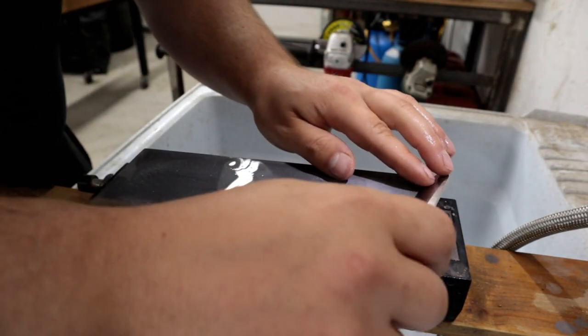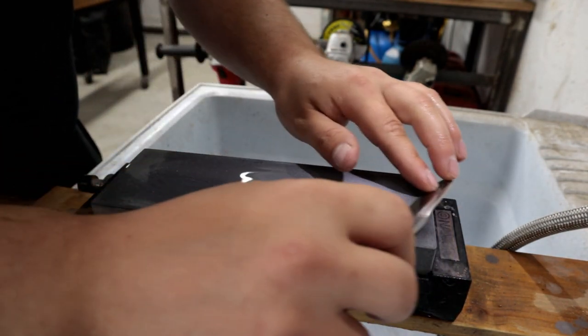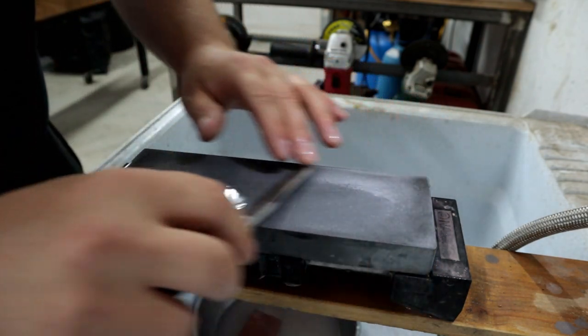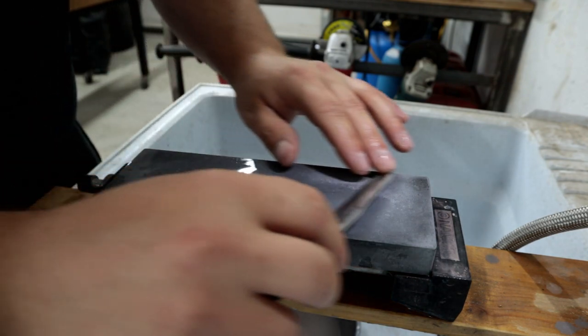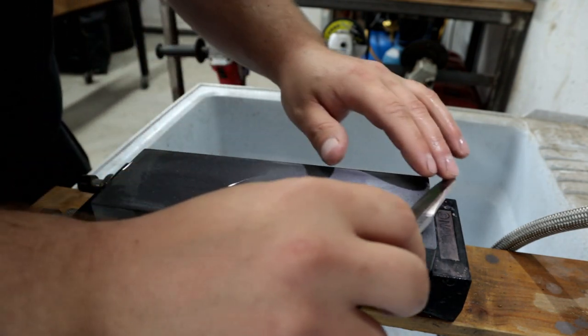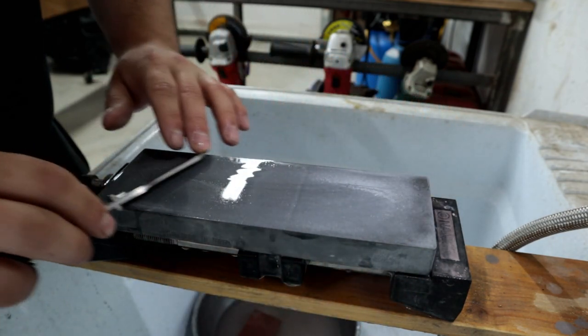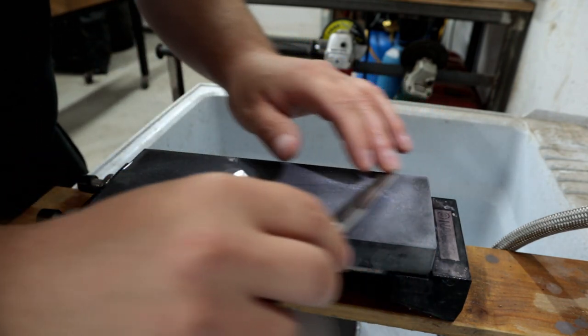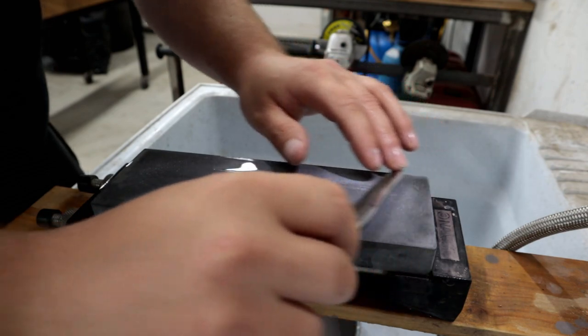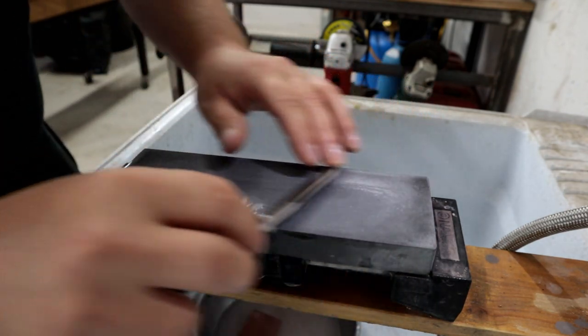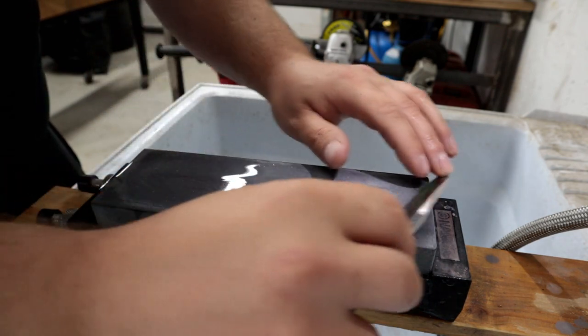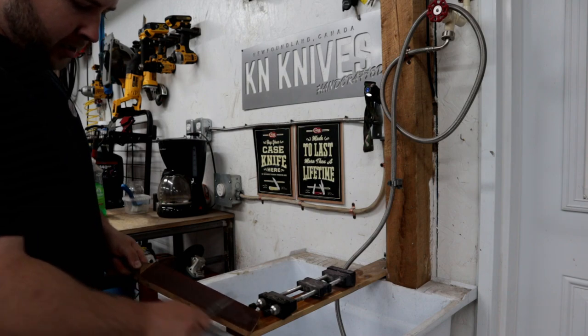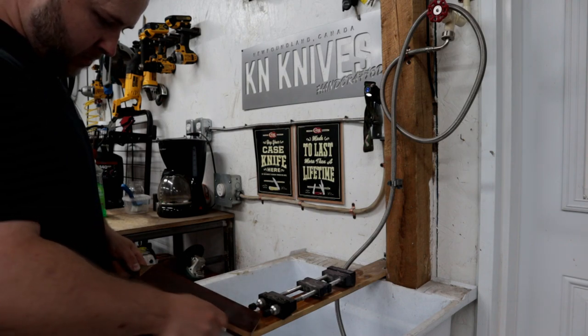And this will be my last stone, which is a Naniwa Professional 5000. You can hear how smooth and slick this stone is. Not going to work it too hard, we've done the bulk of our work. Nice light passes, not a whole lot of pressure here. What a beautiful feeling stone. Now a couple passes on the strop, we'll be ready to start our day.